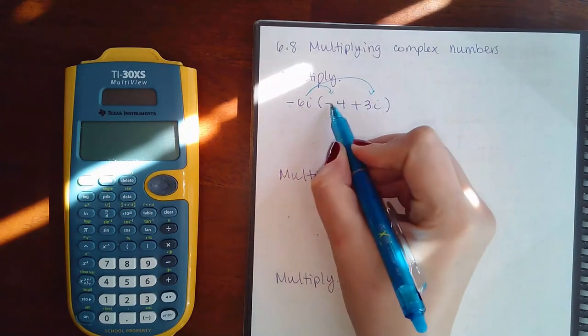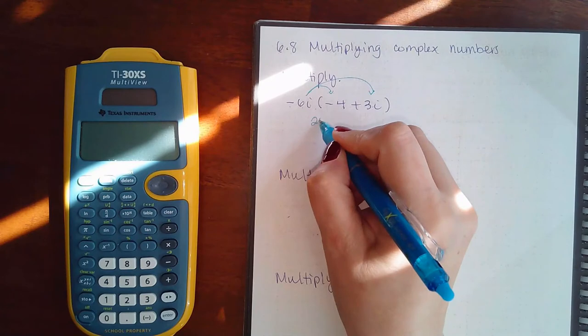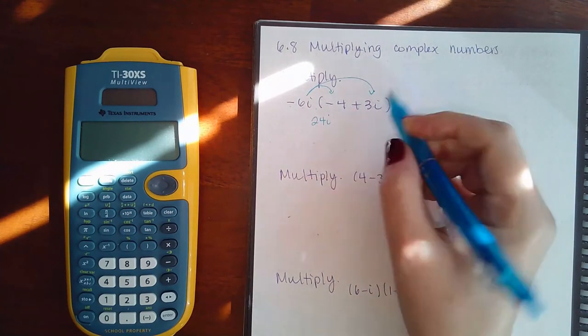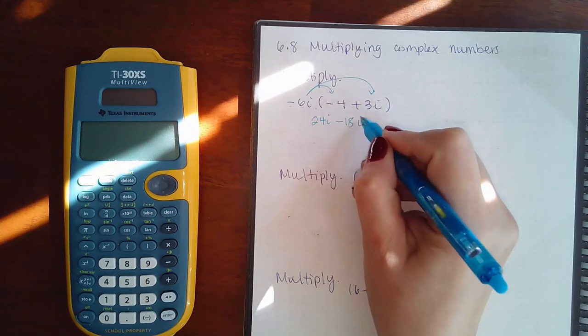So negative 6i times negative 4i will be positive 24i. And negative 6i times positive 3i will be negative 18i squared.